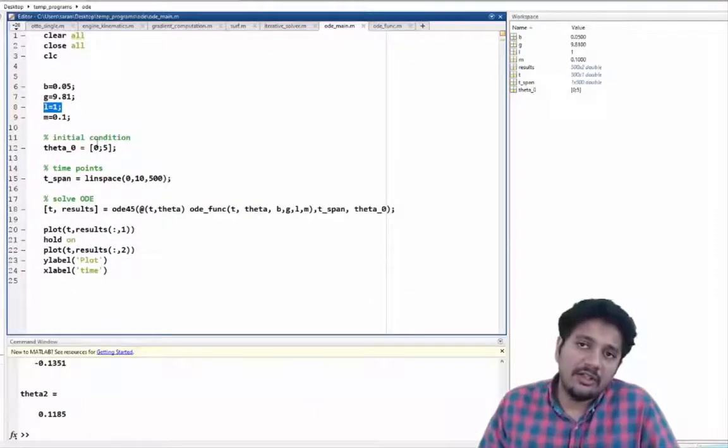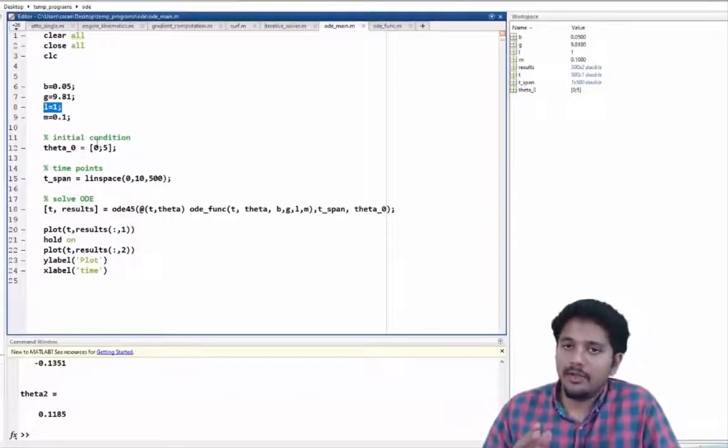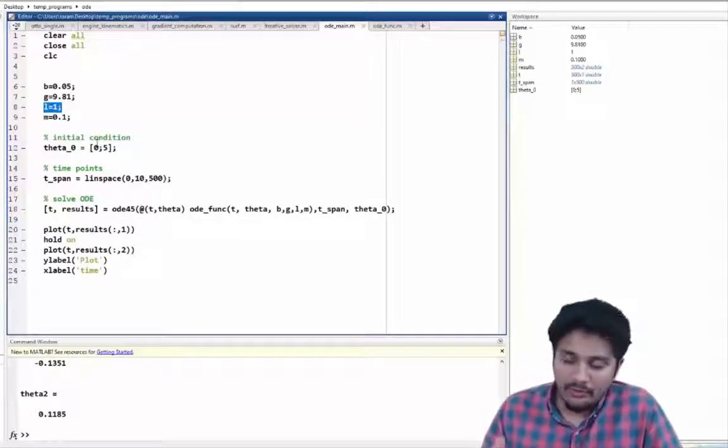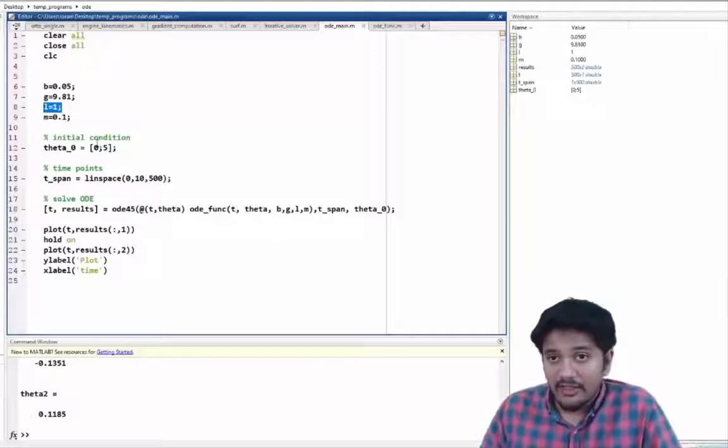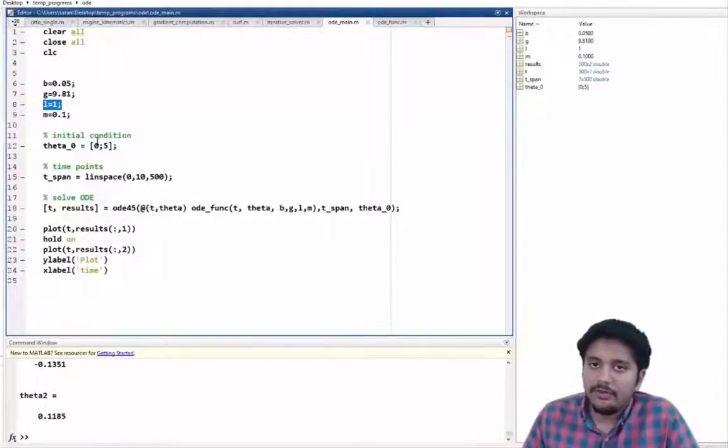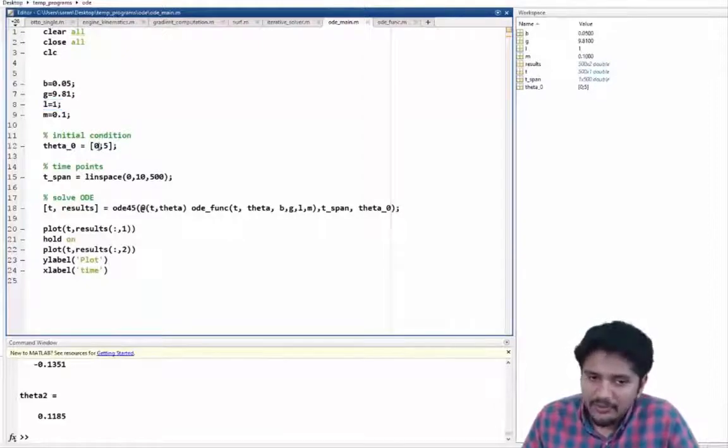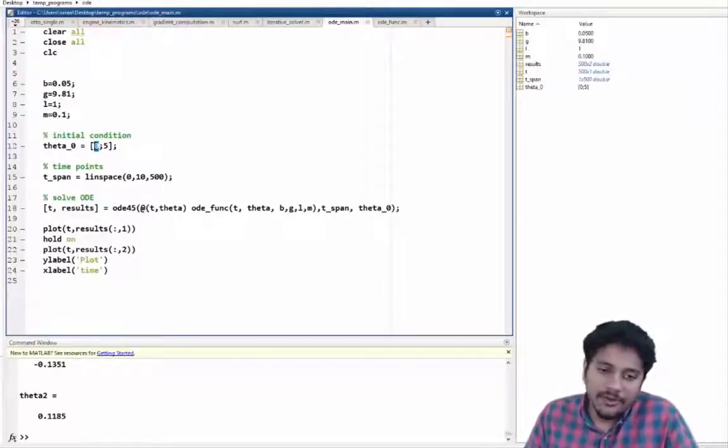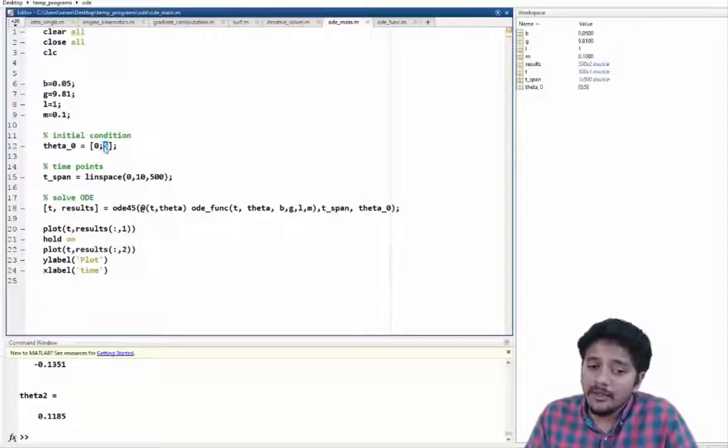And then I define the initial conditions. Now remember we are solving an ODE system and there are two first order ODEs, one for velocity and another for displacement. When you solve the first ODE you need to provide initial conditions for the displacement. So here we are saying that the initial displacement of the pendulum is 0 and the initial velocity is 5 meters per second.